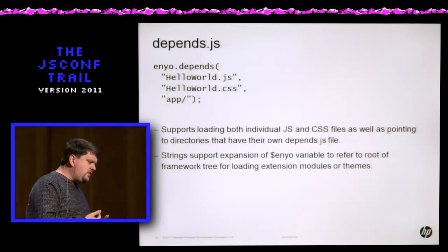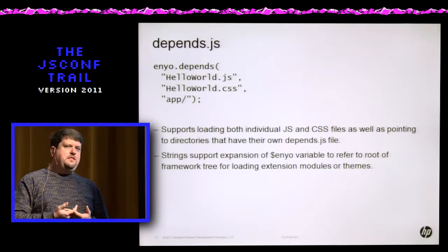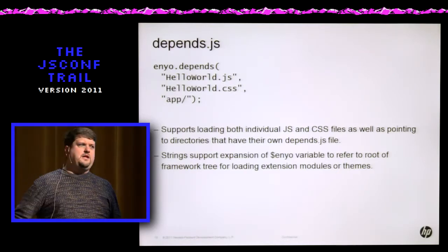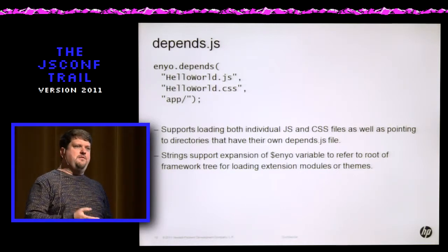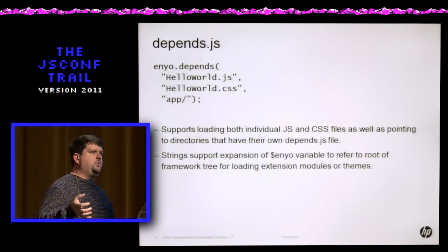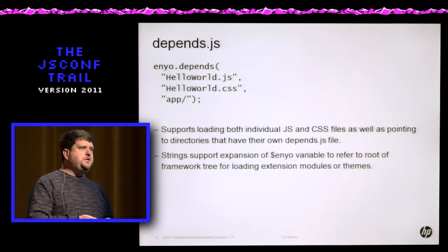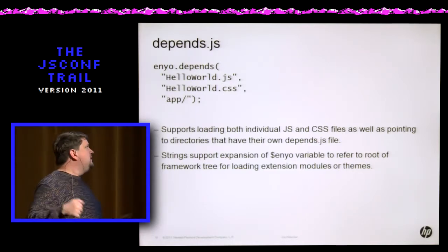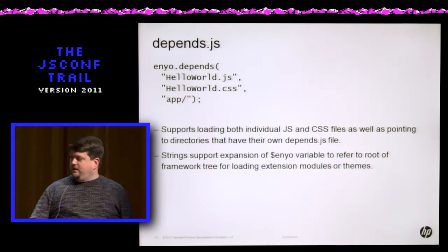We have depends.js. Every new application has at least one of these. It's basically a file that lists what other files get pulled in. The neat thing is that depends can actually reference a directory, allowing you to build a modular application where you're pulling in not just single files but maybe a whole directory that implements some key widget or data service.